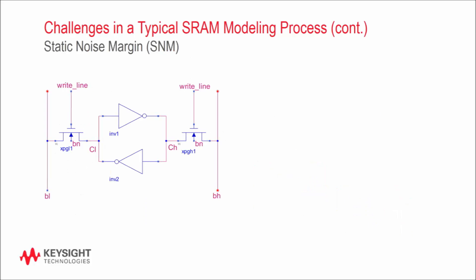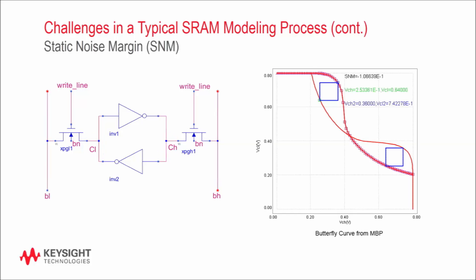Let's take a deeper look at the static noise margin or SNM that I previously mentioned. Suppose we sweep the voltage at CH and observe the voltage at CL. Then we sweep the voltage at CL and CH. After overlaying the voltage transfer characteristics of the two inverters, you can see that what we get is a butterfly curve.